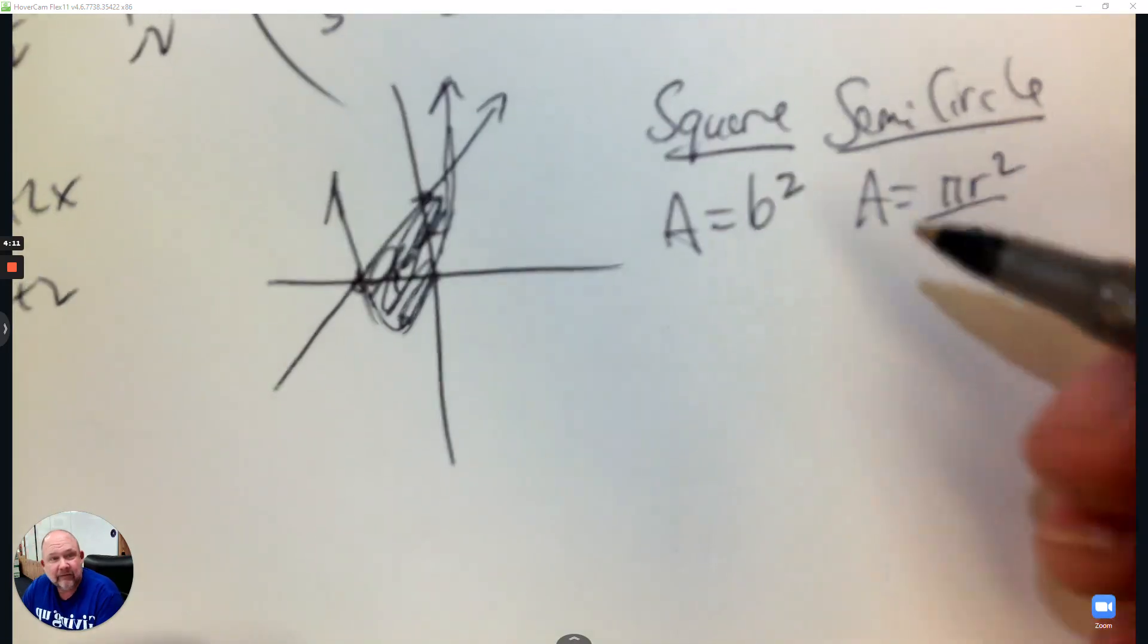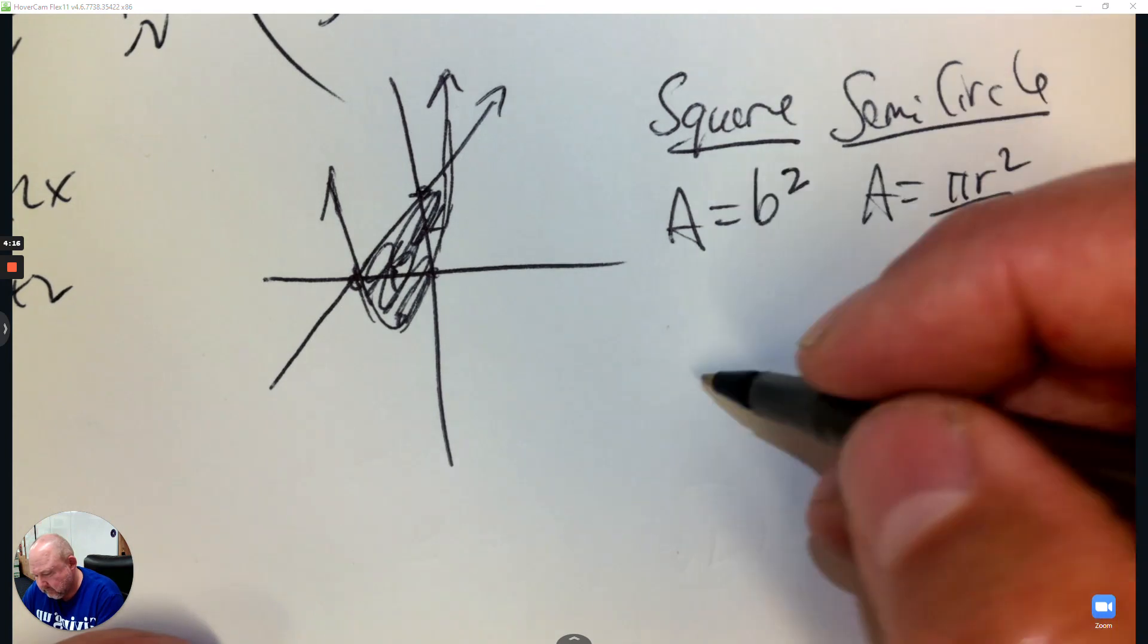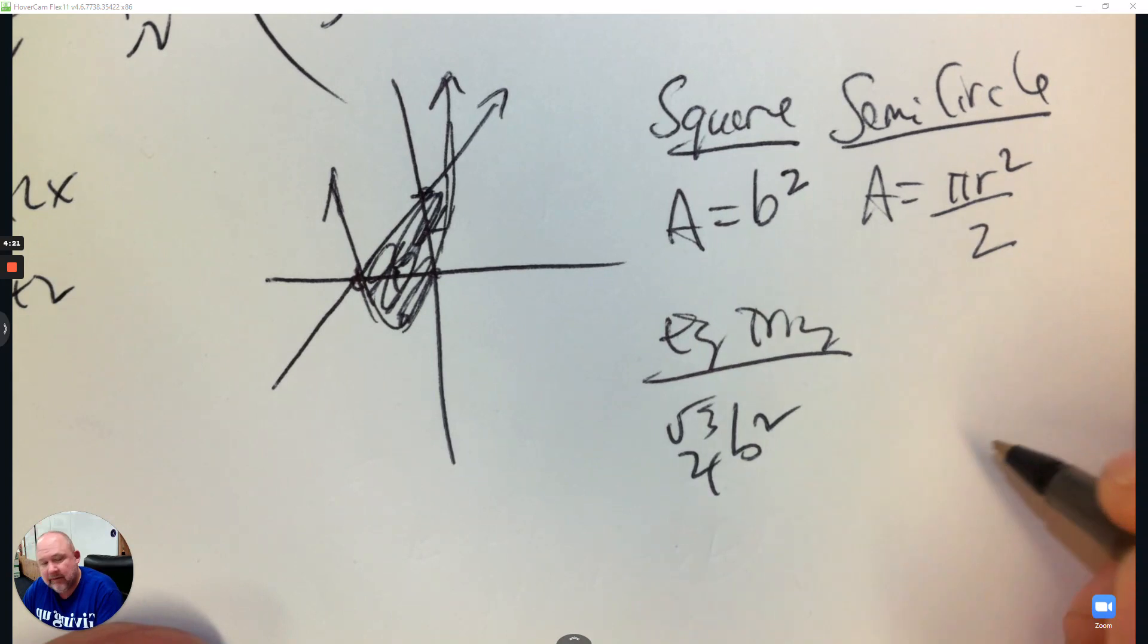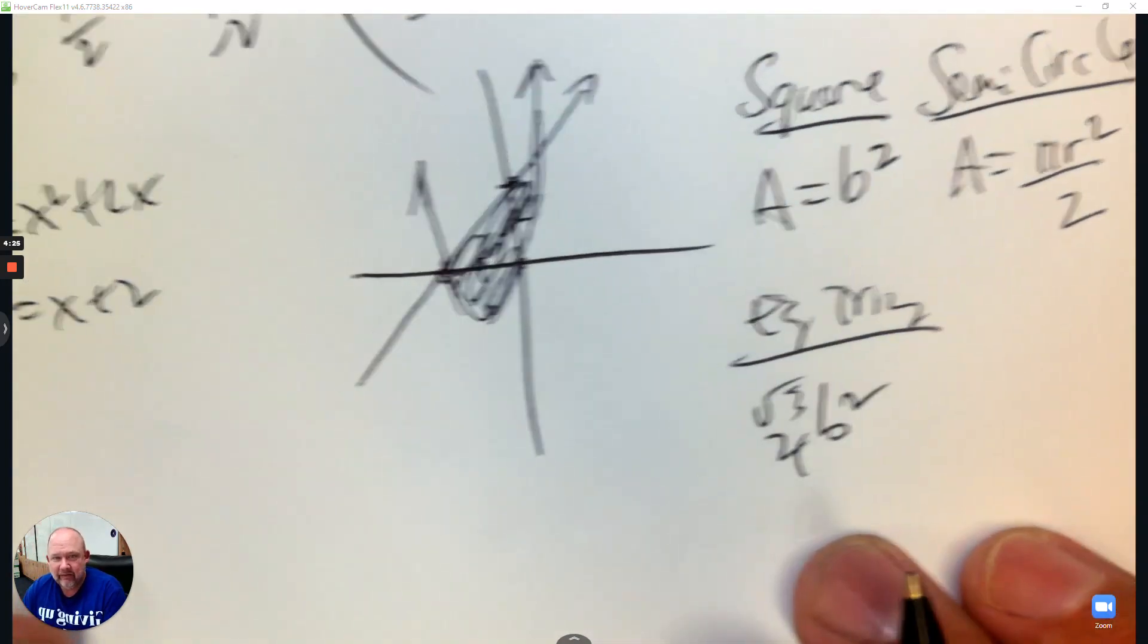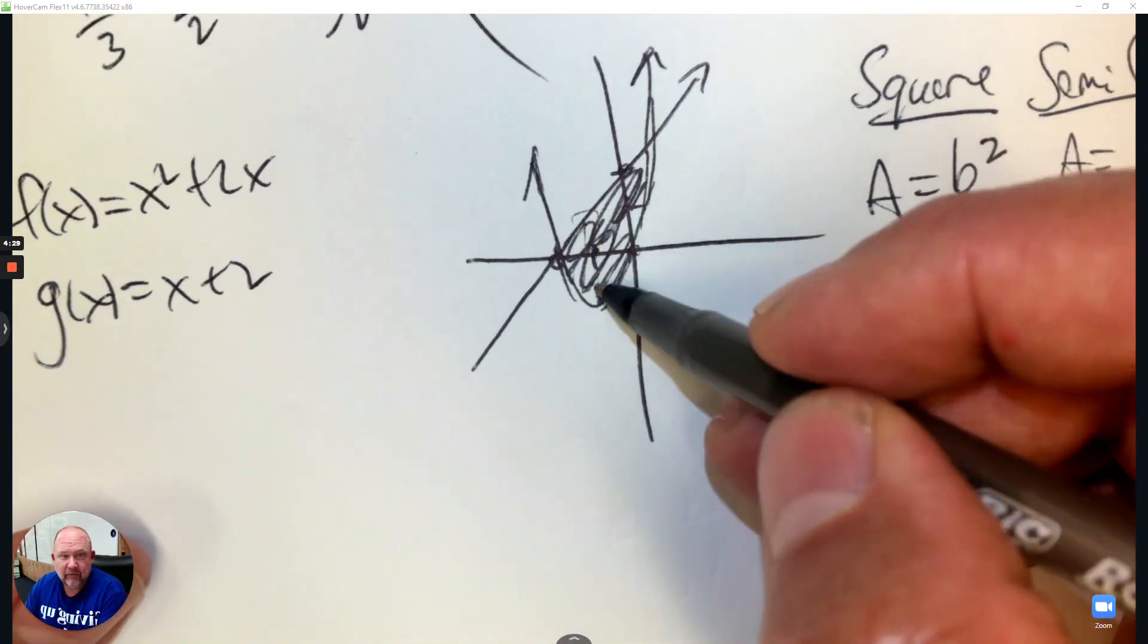If it's an equilateral triangle, it's root 3 over 4, and you take the base and square it. Sometimes it's a rectangle. So we need to know how to handle these situations. So let's say it's a square. So for this area, you find the volume using squares.